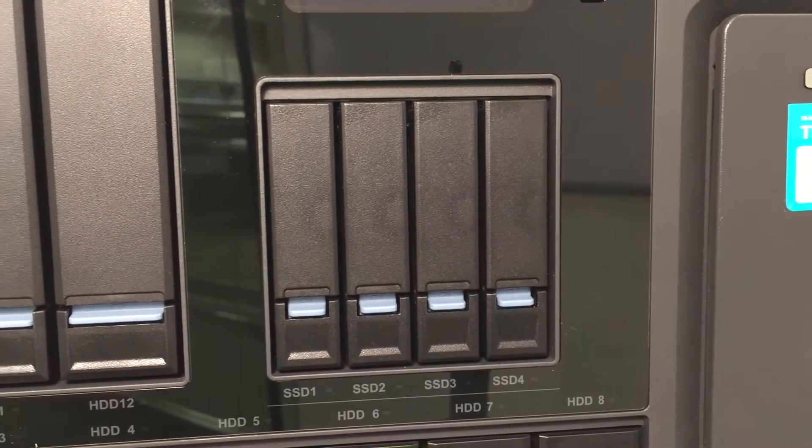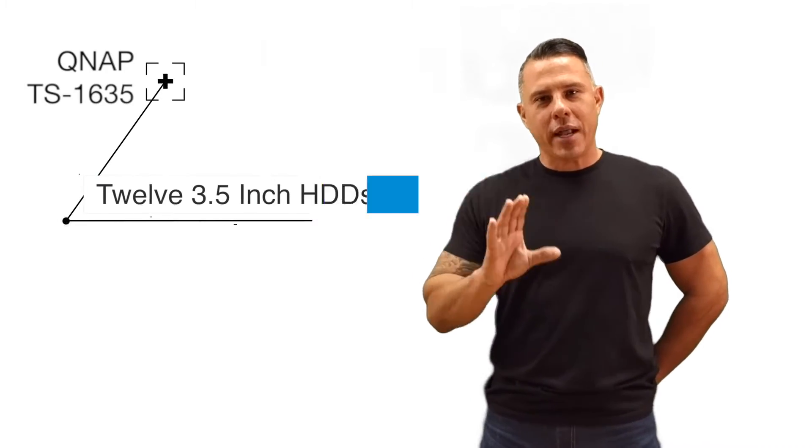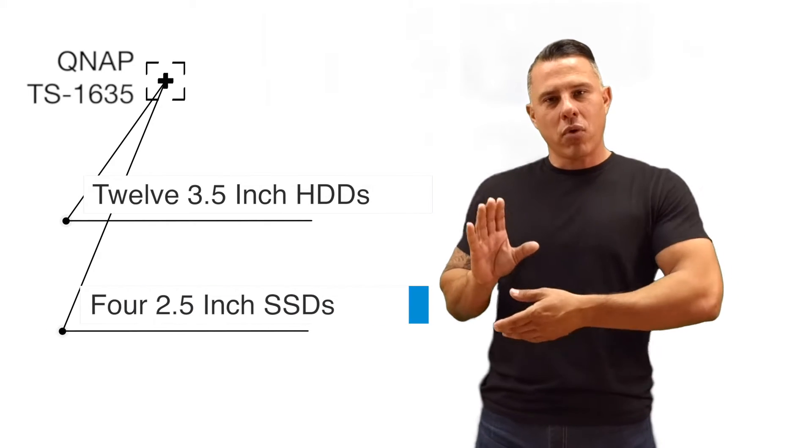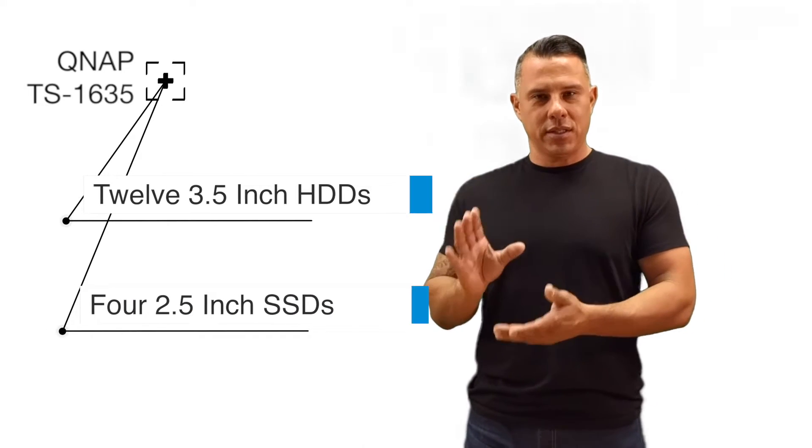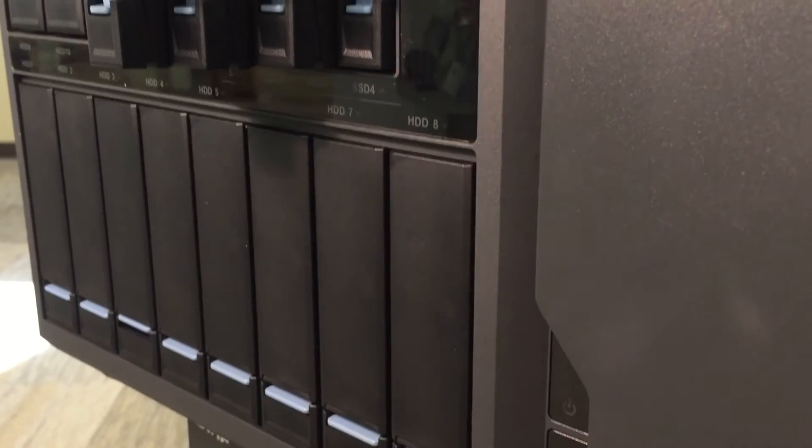You can install 12 3.5-inch SATA drives as well as four 2.5-inch SSD drives. This is ideal when using the QNAP Q-Tier technology.